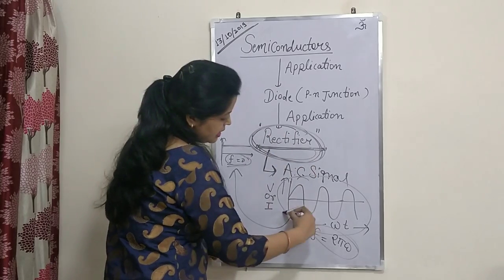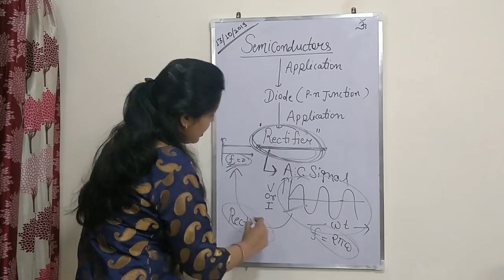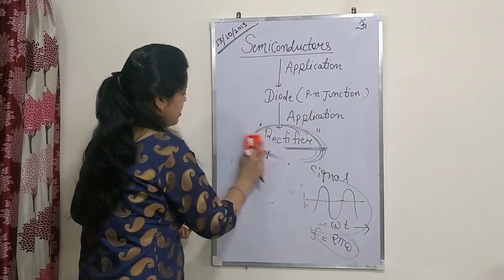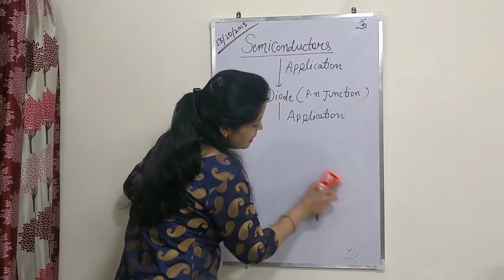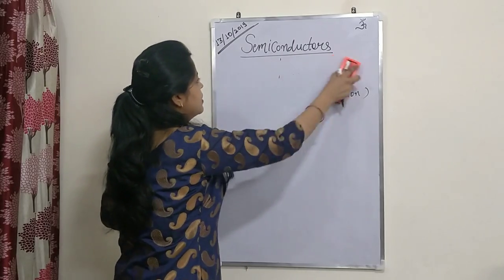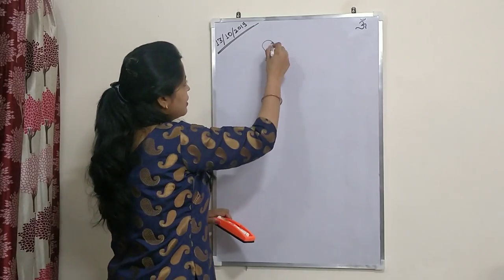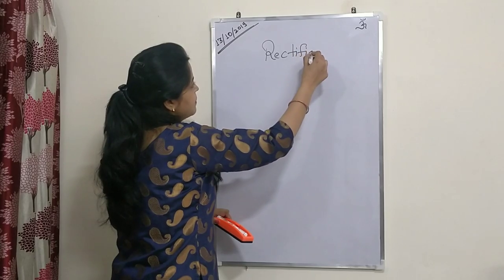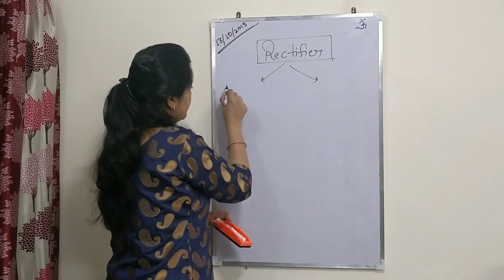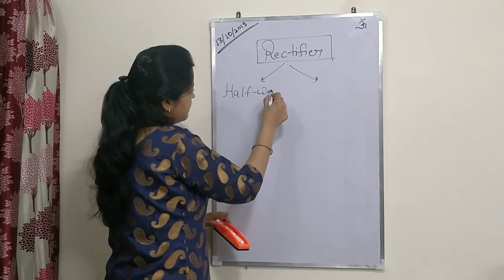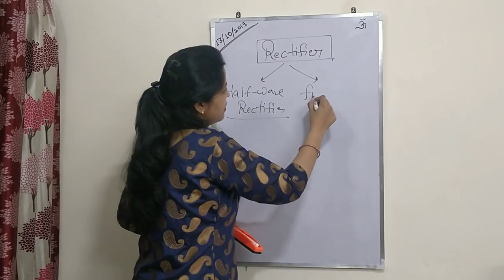So with the help of a rectifier, any AC signal can be converted into a DC signal. Now we have two types of rectifiers on the basis of their designing. The first type is the half wave rectifier and the other type is the full wave rectifier.